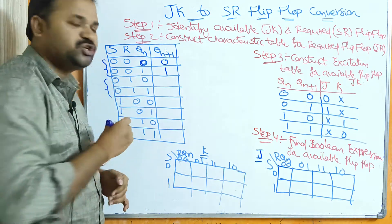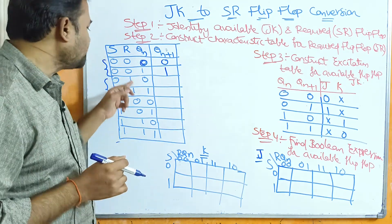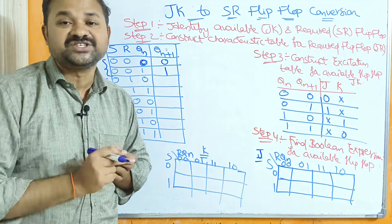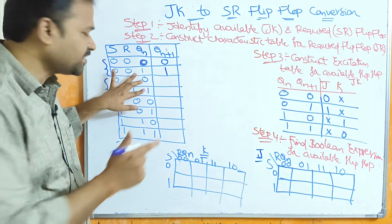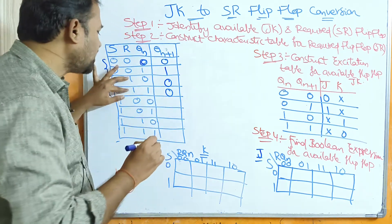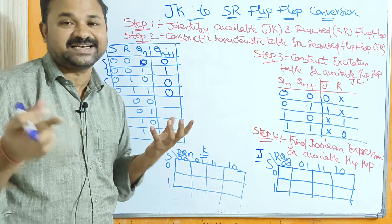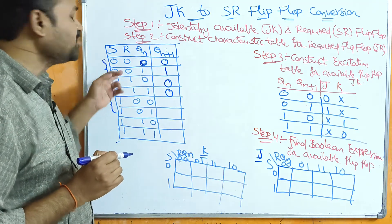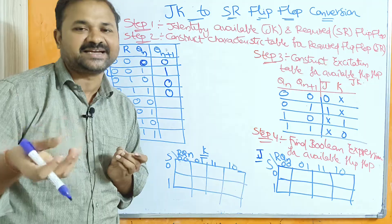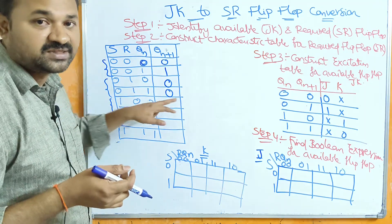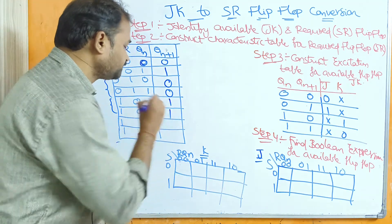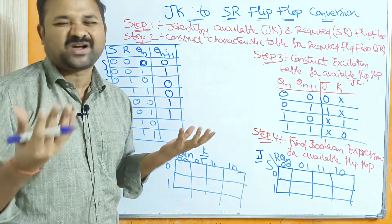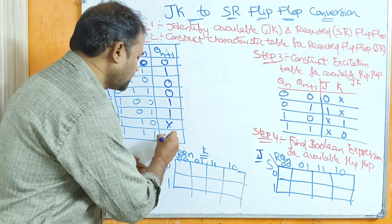The next two combinations have S=0, R=1. Here R value is 1, which stands for reset. Reset means the output is 0. So irrespective of the current state, the next state output is 0, because R value is 1 means reset. The next two combinations have S=1, R=0. Here S value is 1, which means set. So irrespective of the current state, the next state output is 1. And the last two combinations have S=1, R=1. When both are 1, we can't predict the output, so the output is don't care.